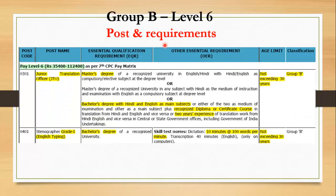Next is JTO — Junior Translation Officer. Those with a Master's degree in English or Hindi have a very good opportunity to enter a regular post in DRDO. This is a Level 6 job with a salary of around 50,000 rupees per month. The maximum age requirement is 30 years.